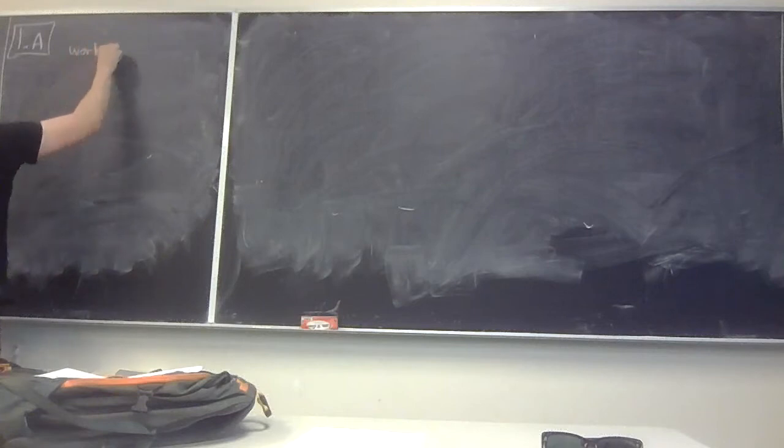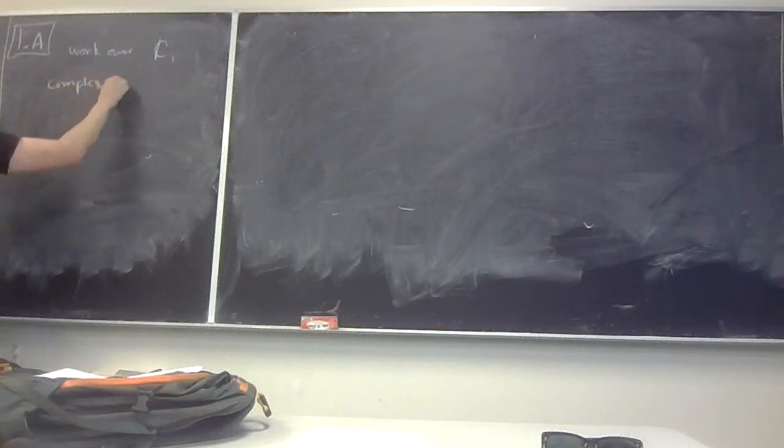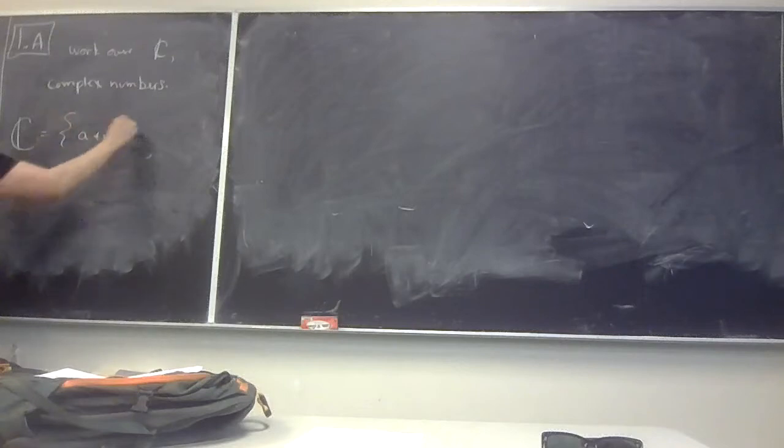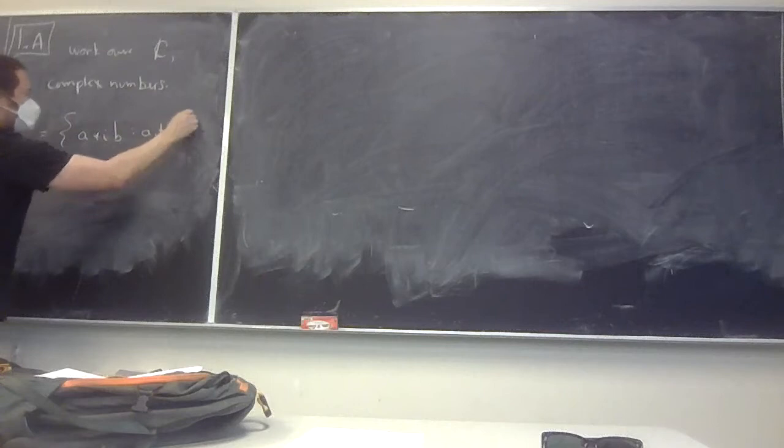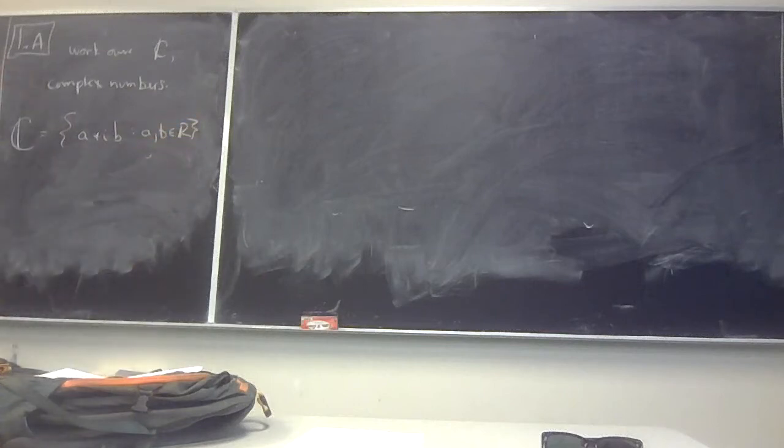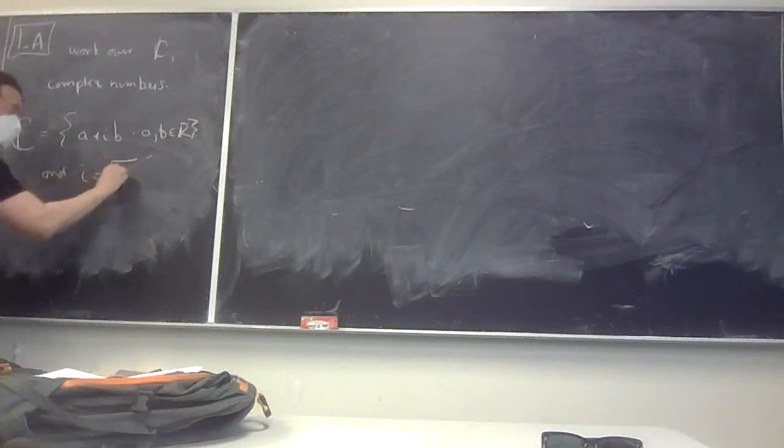The first thing - this is Chapter 1A. We're going to start with linear algebra, perhaps unlike your earlier courses. We're mostly going to be doing linear algebra over the complex numbers. The reason is because complex numbers are way nicer than real numbers, a lot. So we're going to work over C, complex numbers.